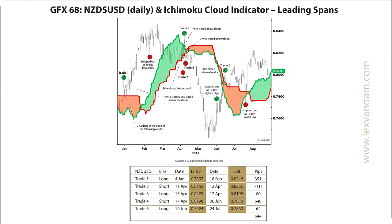Trade 4 was stopped out on the 6th of June, and a long was given a couple of weeks later when the price broke above the cloud. This last trade was unprofitable as it hit the 10-day low towards the end of July. In total there were 5 trades. The first and fourth trades were great, but the others made a loss. Overall there was a good return of over 600 pips.